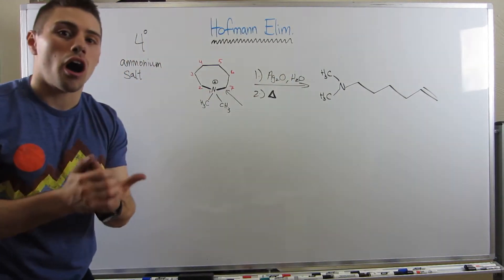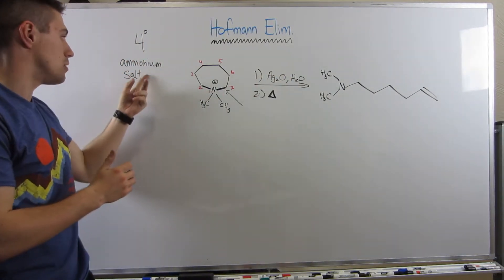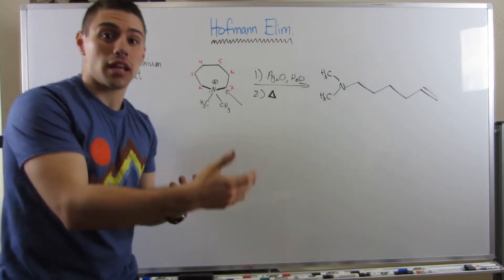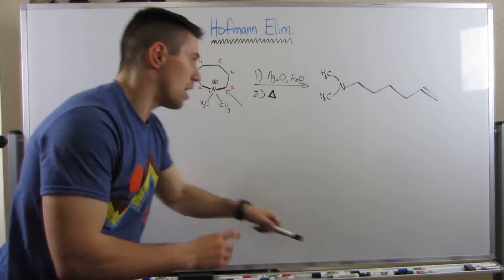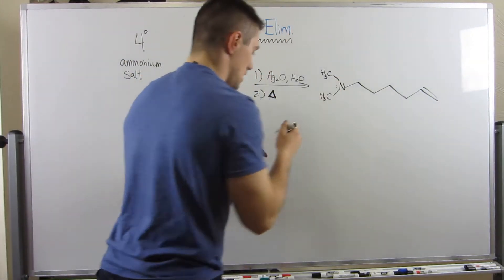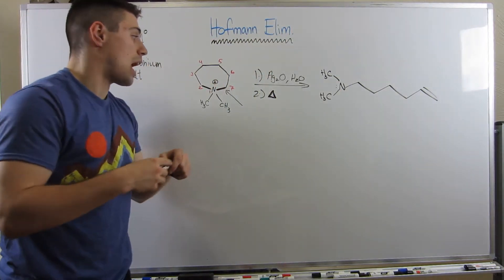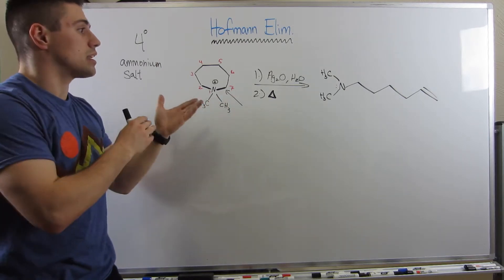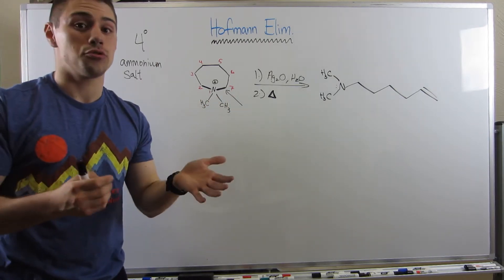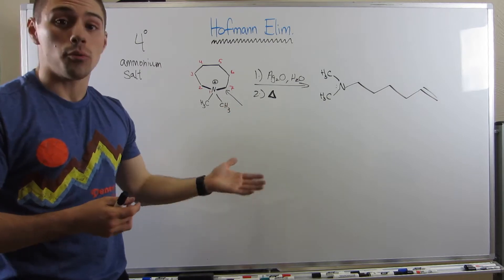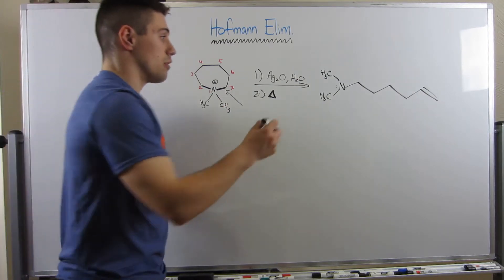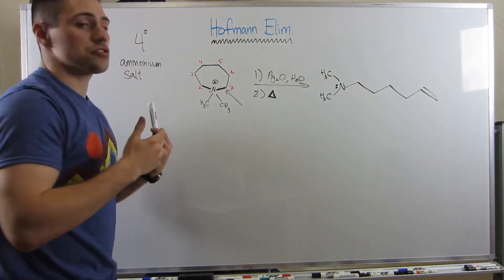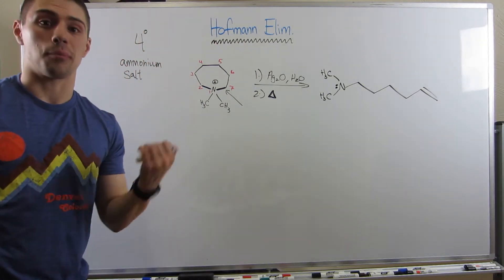So, what's key to a Hofmann elimination is that you need an ammonium salt, right? Because nitrogen is electronegative. He likes electrons. This is a pathway. If he doesn't have some hydrogen to pick off and dump electrons on him, we can cleave a carbon-nitrogen bond by forming a carbon-carbon double bond and, through that, eliminate a positive charge on him while also making an alkene in the process.